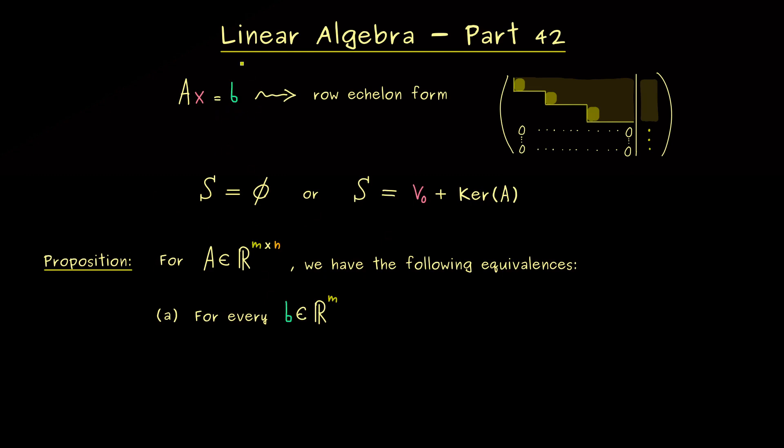Please recall, in the last video we learned that the existence is crucially connected to the right-hand side b. Therefore, in this proposition here, we now consider every possible right-hand side b. In other words, we want that the statement Ax = b has at most one solution is correct no matter which b we choose.